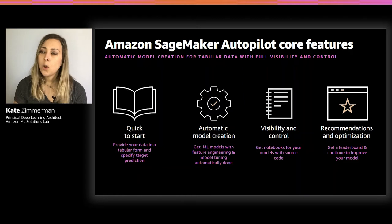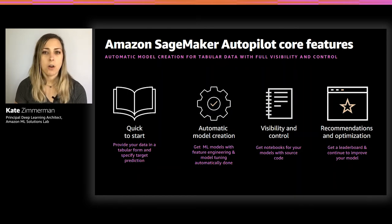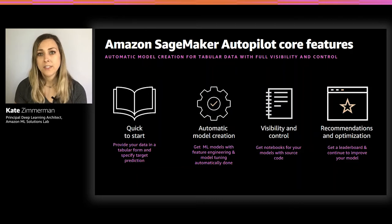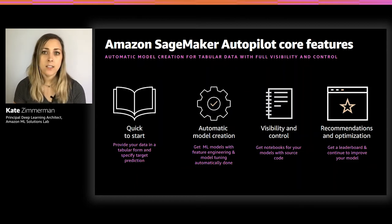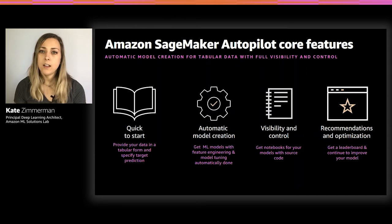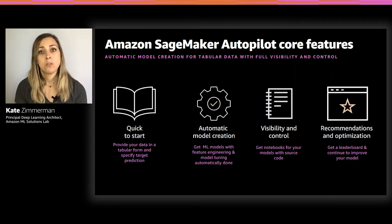Autopilot is easy to start with just a few clicks in the console, an API call, or a couple lines of Python code — and you can be building and tuning machine learning models in no time. This is truly meant to be a set-and-forget experience: input your data, set your target column, click go, and come back in a few hours to find your model ready. Autopilot is as much of a black box as you want it to be — beginners can quickly get started, while experienced experts can analyze how Autopilot selected feature combinations and hyperparameters to inform future development.